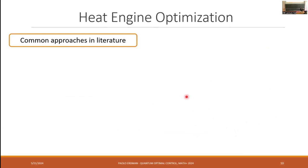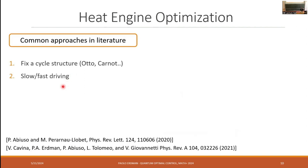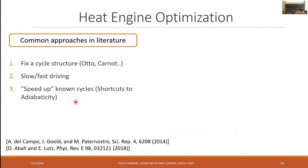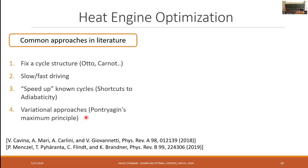So there have been many approaches in literature to study the optimization of heat engines, quantum heat engines. For example, people have proposed cycles based on the Otto cycle or the Carnot cycle and optimize over the period of these cycles or the duration of the strokes. Another approach is to do an expansion, a perturbative expansion of the driving speed compared to the thermalization time scale of the quantum system. Another approach is to use, as mentioned in the previous talk, shortcuts to adiabaticity, to take a cycle that works well in the adiabatic limit and try to study them at finite time using shortcuts to adiabaticity. And also variational approaches, such as Pontryagin's maximum principle, have been applied.